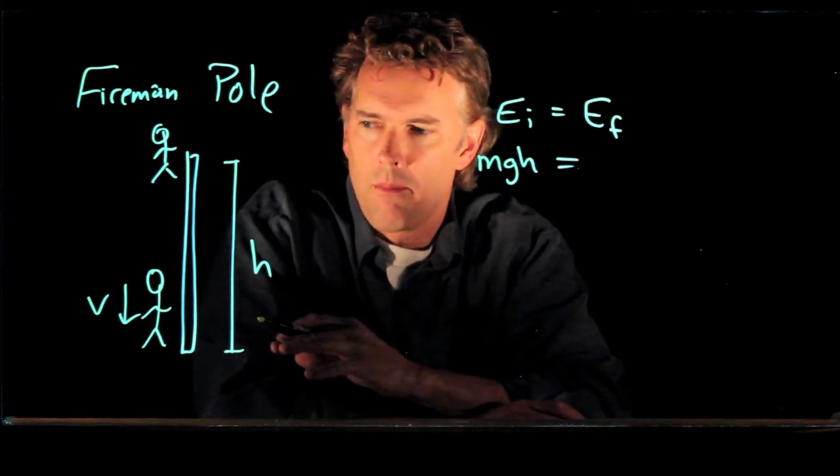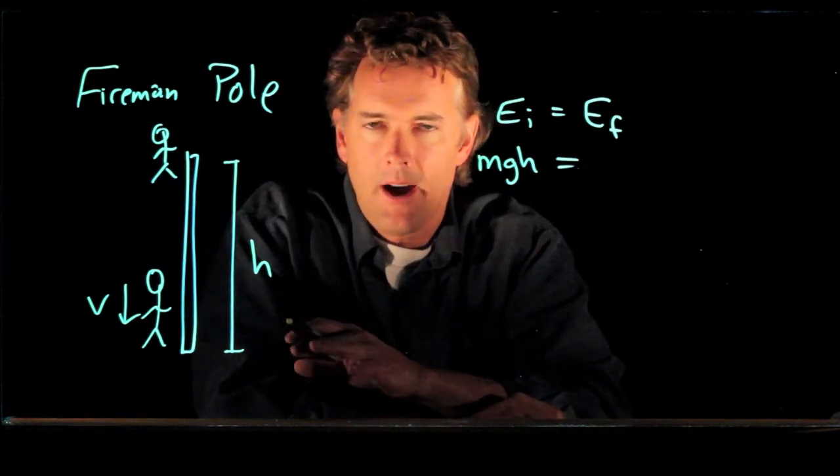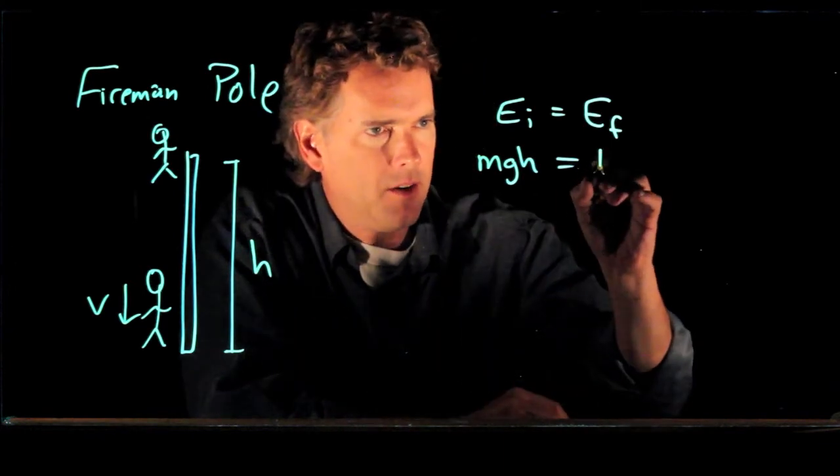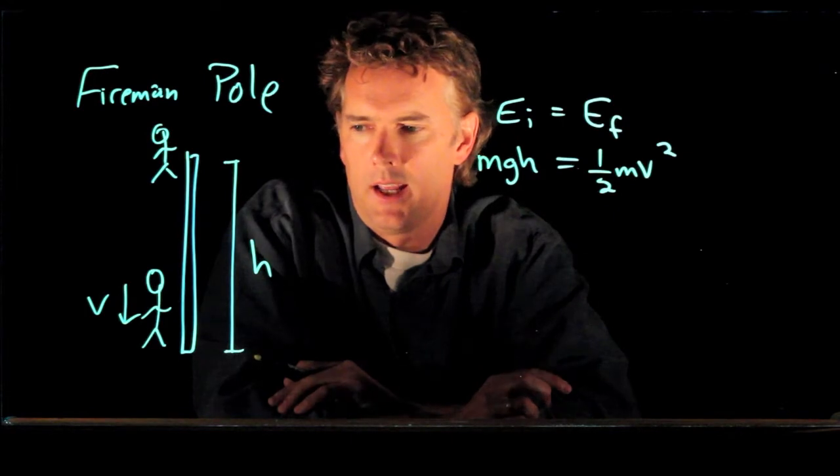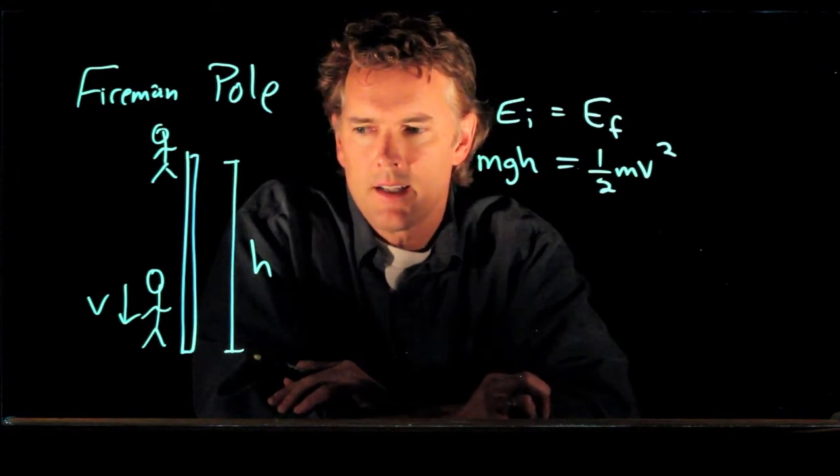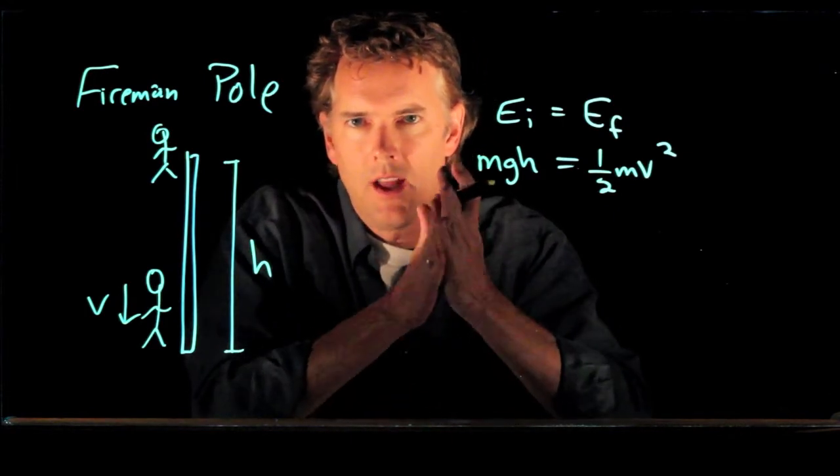When he gets to the bottom, he's now at a height of zero, but he has kinetic energy. And so we have one half mv squared for kinetic energy, but his hands have heated up.